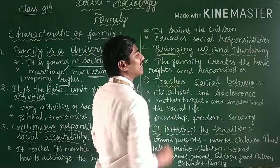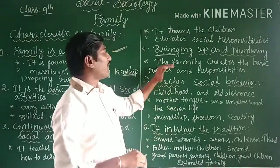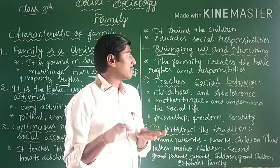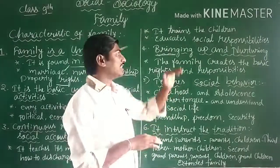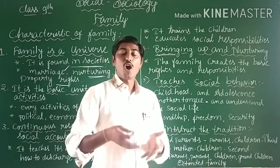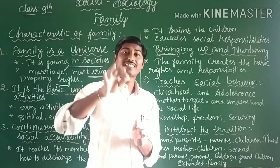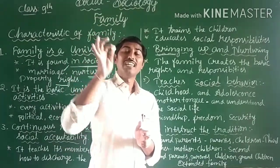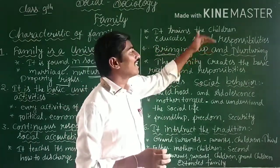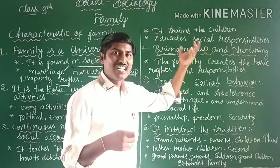The fourth characteristic is bringing up and nourishing. The family creates the basic rights and responsibilities. After marriage, when a baby is born, the family teaches how to nourish the baby, how to bring them up, how to educate them, and how to make them a responsible citizen of the country. The family is responsible for bringing up and nourishing children.